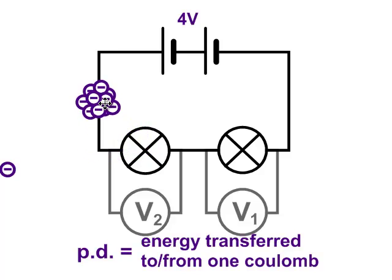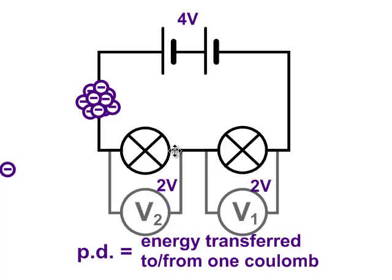If each of these two bulbs are identical, then it's going to give up an equal amount of energy to each of the two bulbs. So if the potential difference across the first bulb, measured with this voltmeter V1, is two volts, the second one is also going to be two volts. And you'll notice that this adds up to the potential difference across the supply.